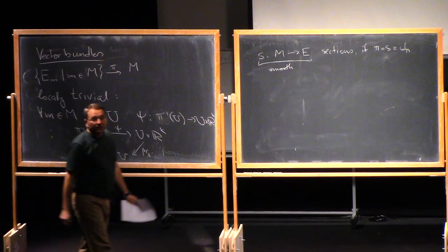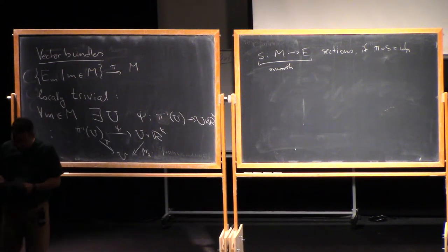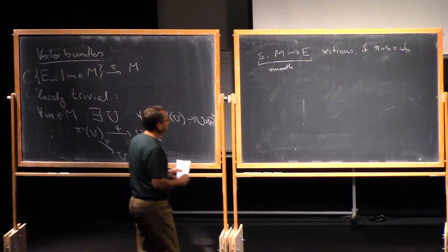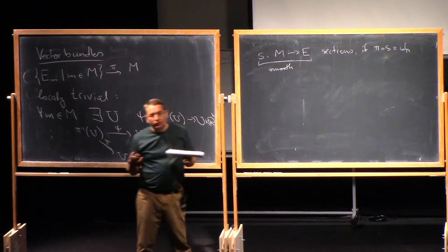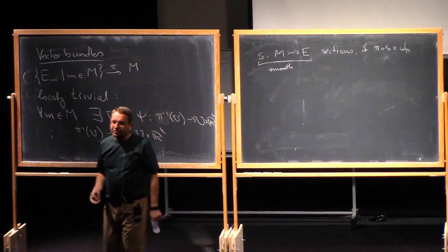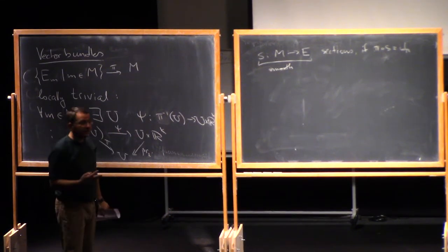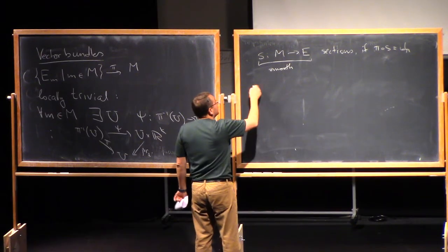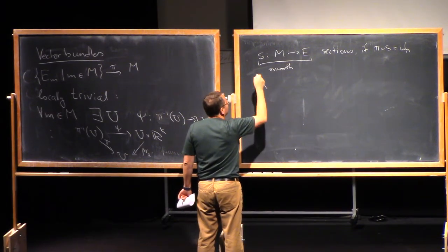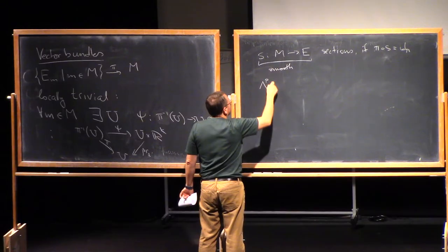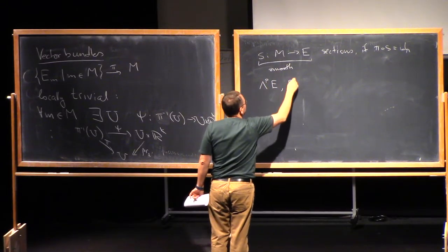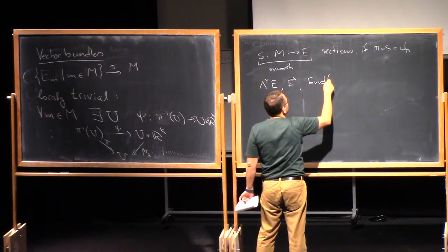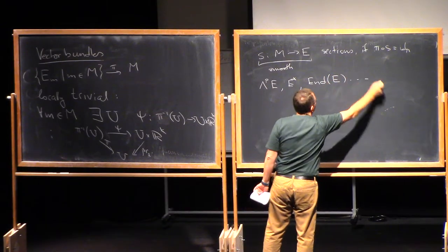A section of a vector bundle is a map S from M to E such that the composition π∘S is the identity on M — in other words, you pick a vector in each fiber depending smoothly on M. I will always work in the smooth category. Any construction from linear algebra that doesn't require a choice of basis carries over to vector bundles: you can construct Λ^p E, E dual, endomorphisms of E, and so on.